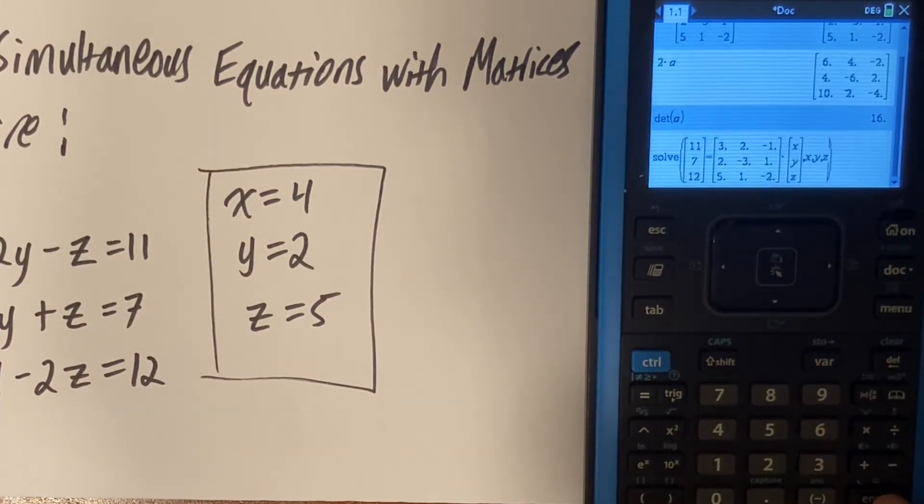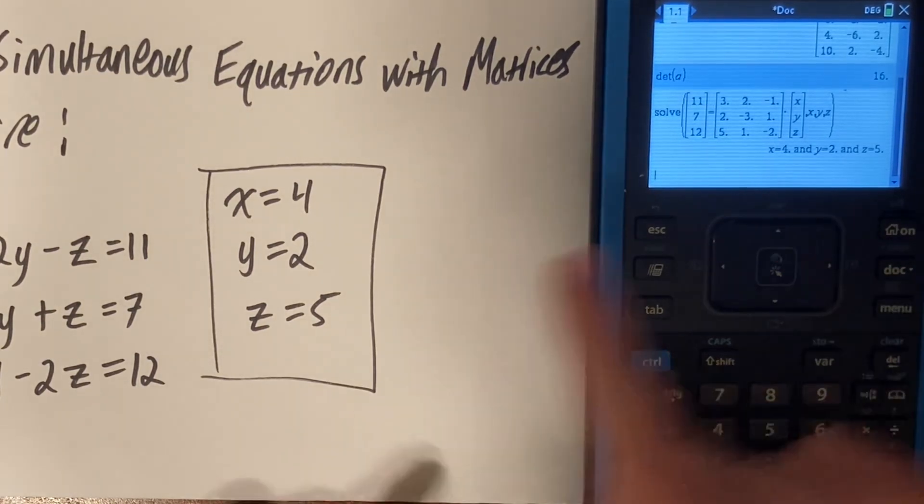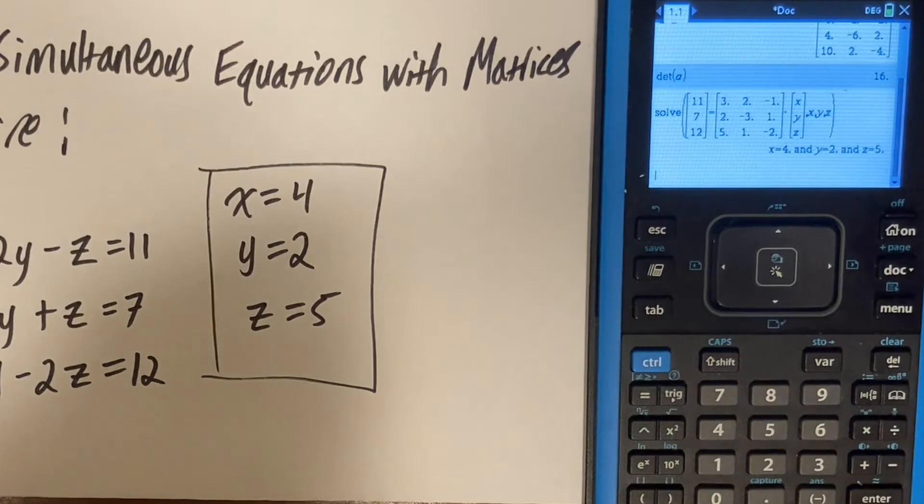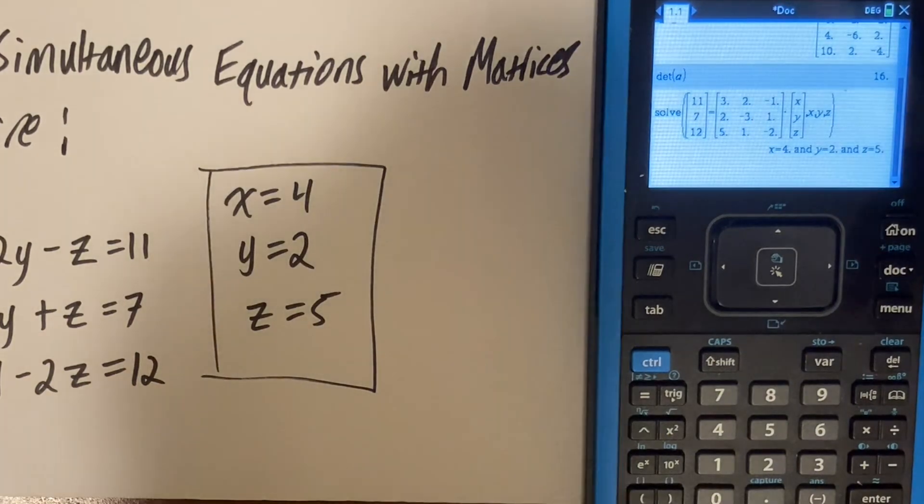Which means you're going to solve for x, y, z. You can do this for all equations, including matrices. That will give us the same answer as before, which is x equals 4, y equals 2, and z equals 5.